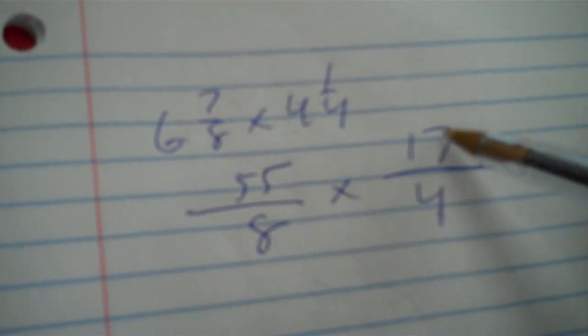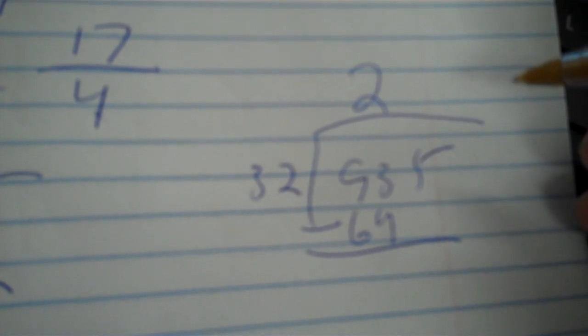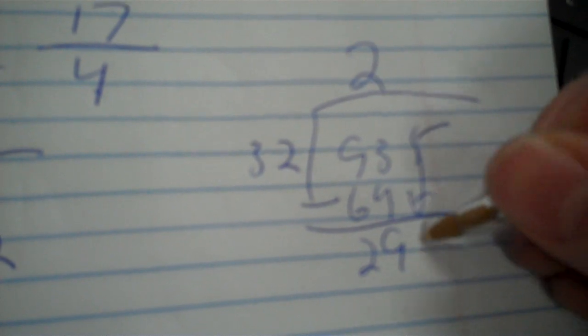6 and 7 eighths times 4 and 1 fourth. Again, to multiply fractions, we multiply tops and the bottoms. But, that means that whole number can't be there like when I add and subtract. You can't take 6 times 4 and then 7 eighths times 1 fourth. It doesn't work that way. So, 8, 4. 6 times 8 is 48. Plus, 7 is 55. 4 times 4 is 16. Plus, 1 is 17. 55 and 8 don't have a common factor. 17 is prime, so it's not going to have any common factors with the 8 and the 4. So, 55 times 17, 935. 8 times 4 is 32. 32 goes into 93 twice. 32 times 2 is 64. The 93 minus 64 is going to be 29.